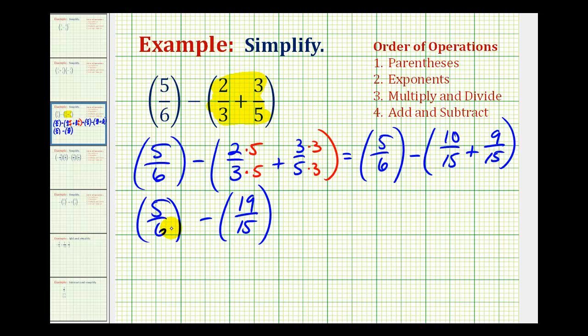So we'll have to multiply this first fraction by five over five, and multiply this fraction by two over two. So now we'd have twenty-five-thirtieths minus thirty-eight-thirtieths.